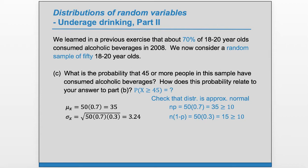So we can use normal approximation here. So we'll need a z-score that's going to be our x of interest minus the calculated mean and divided by the standard deviation. So that's going to be the 45 minus the average of 35 divided by the standard deviation of 3.24. That gives us 3.09.